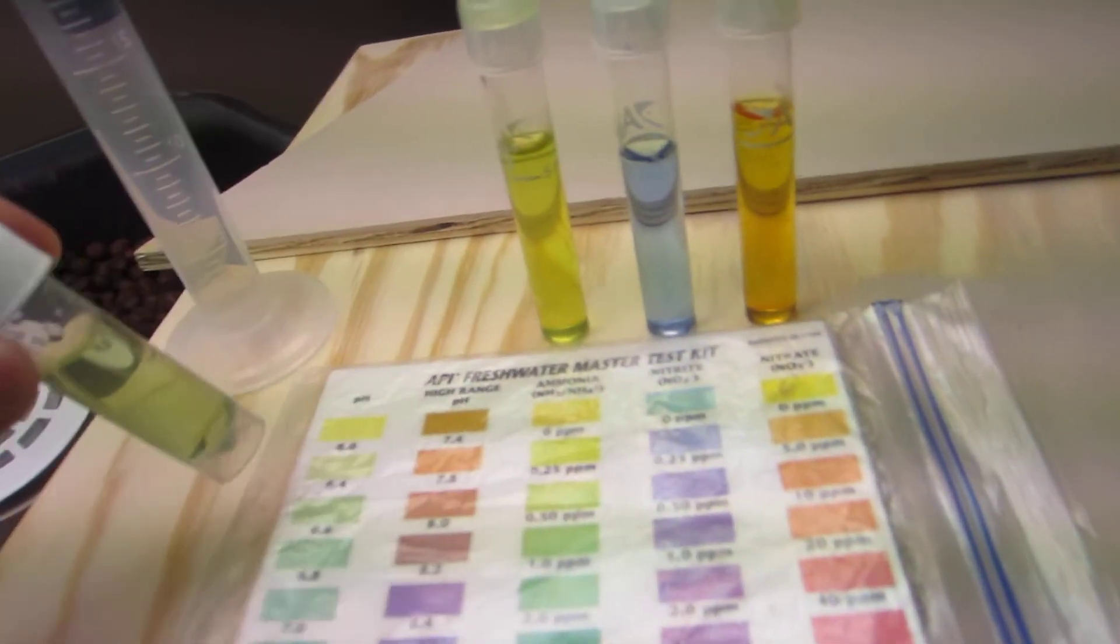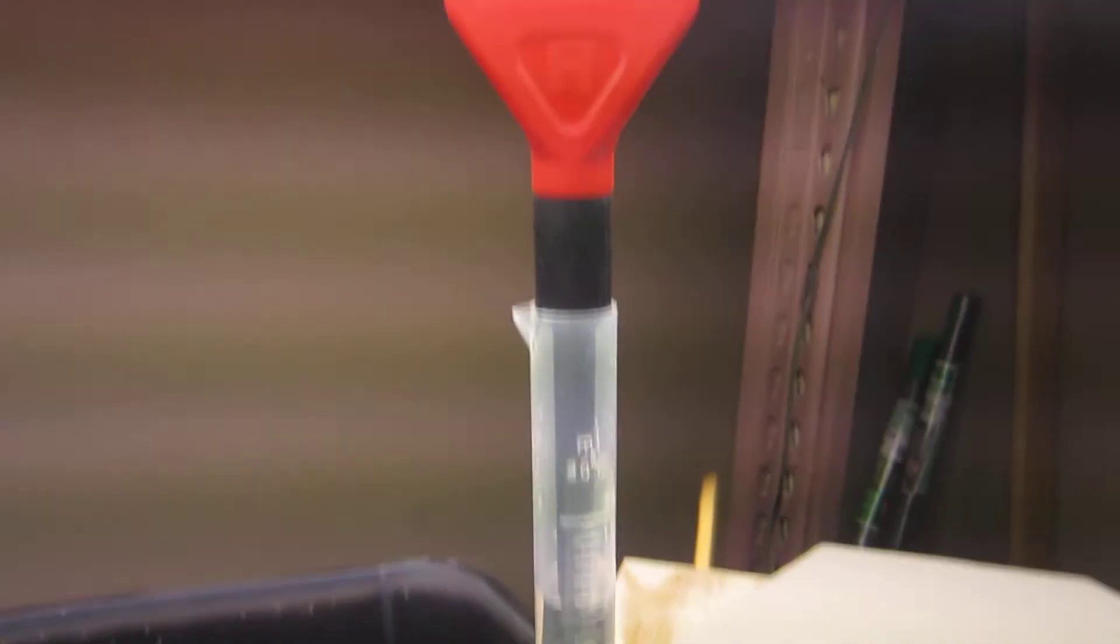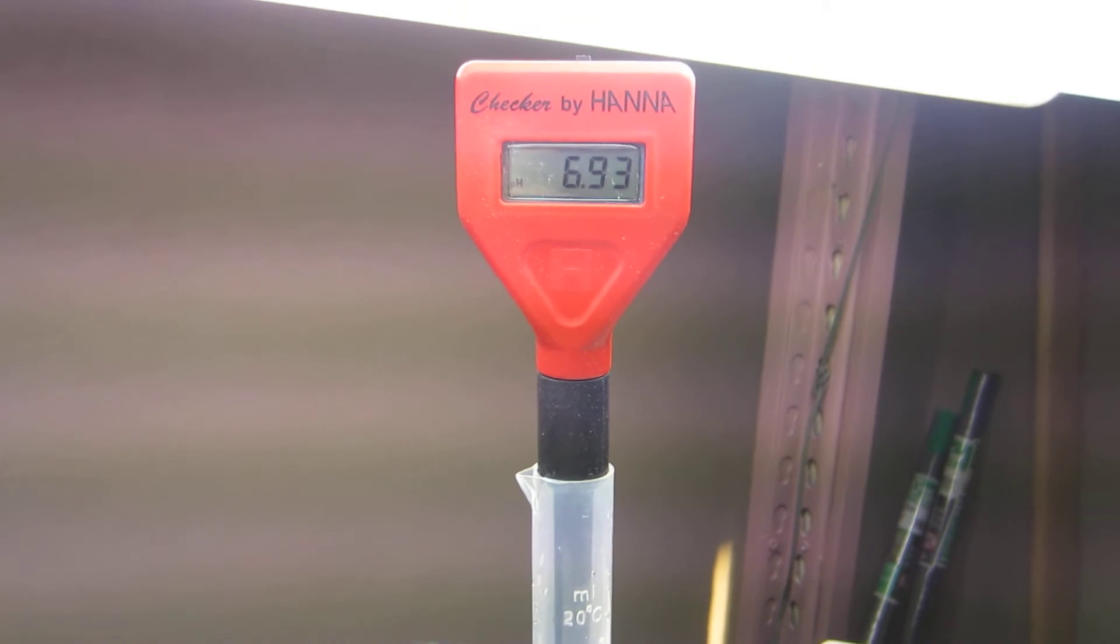So for pH, I'm at about 6.4, and my electronic pH meter is reading 6.93.